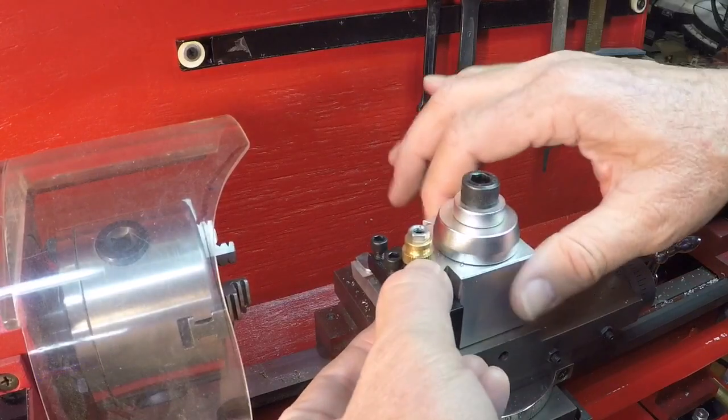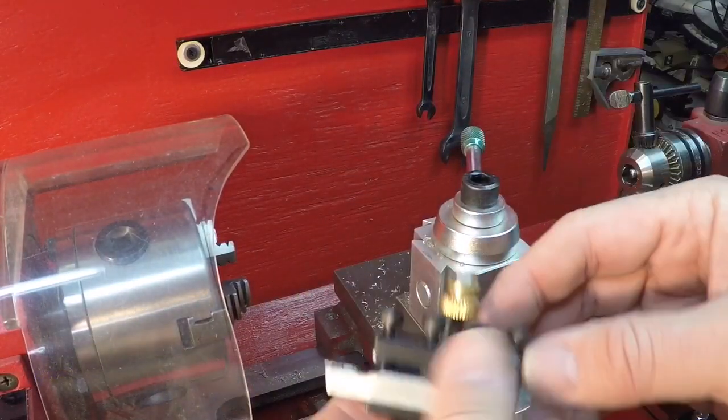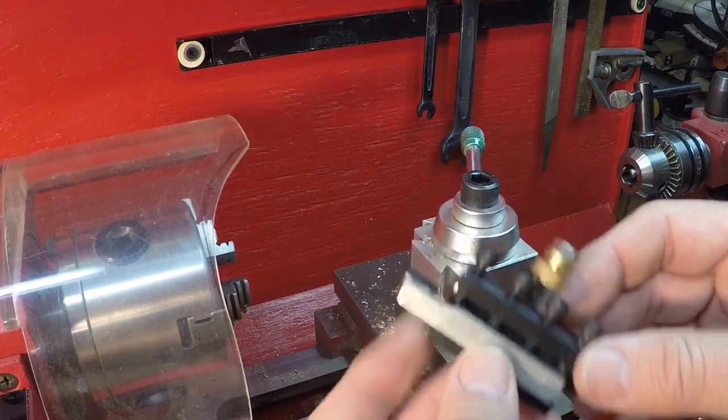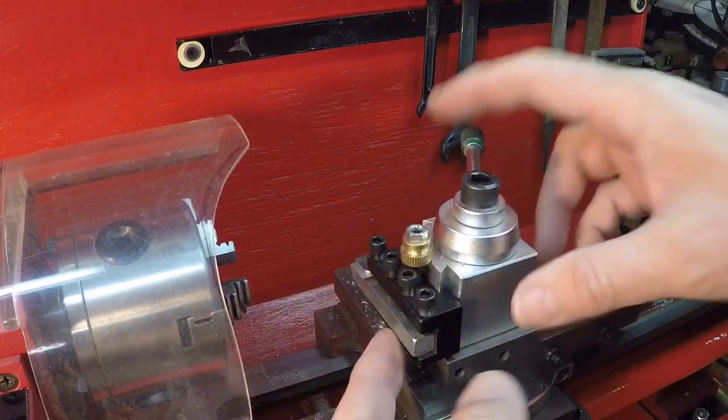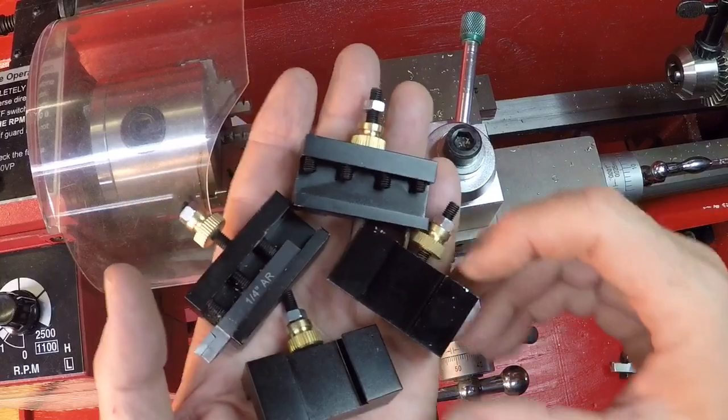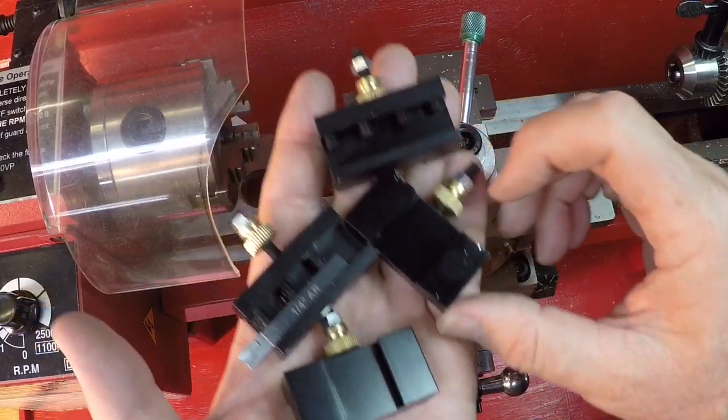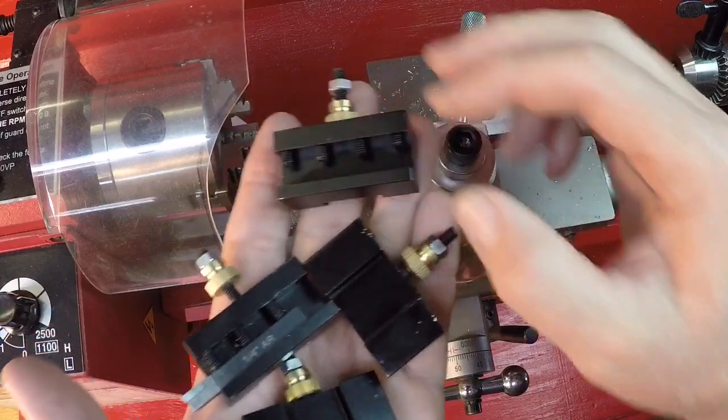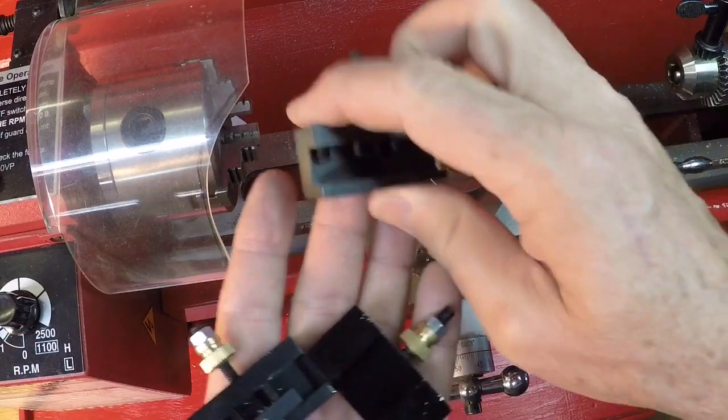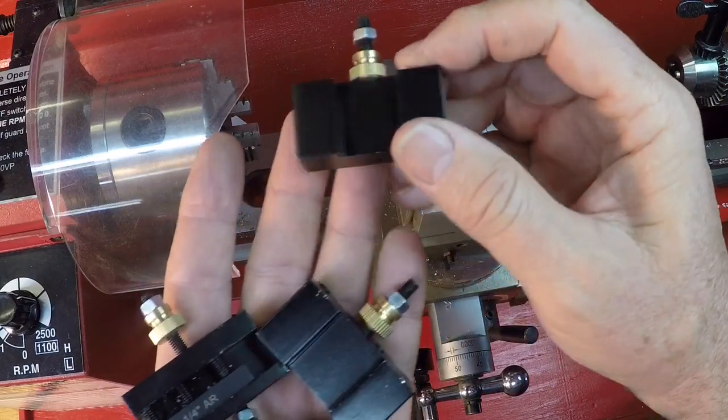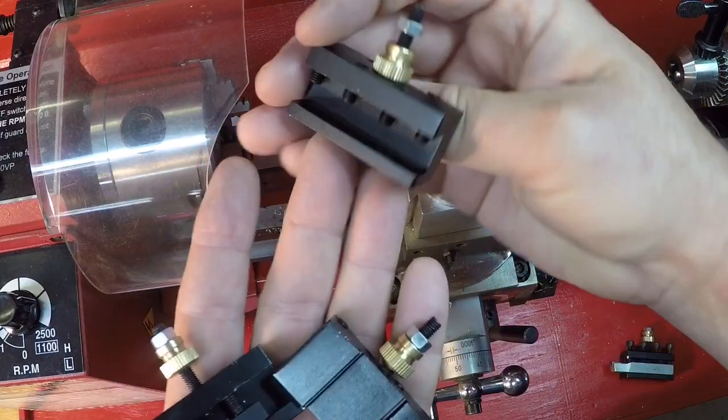I bought the Genwin quick change tool post kit, got it on eBay, I think I paid about $32 delivered for this and I've gotten really good service out of it but I didn't have enough tool holders in the Genwin set and I was constantly having to change tools back and forth. So I decided to get some more tool holders and I found these on eBay and when I bought them they were $4 a piece with free shipping from China.